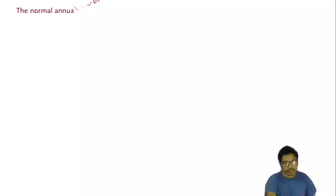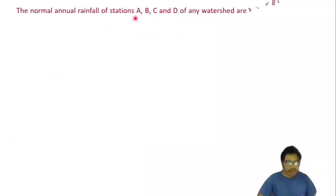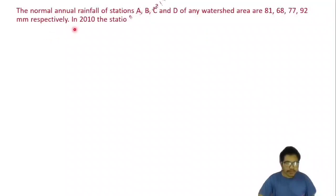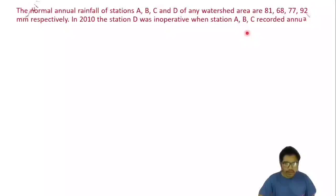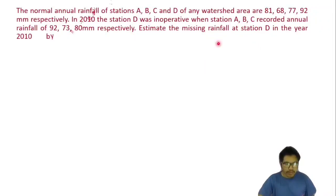In this video we will see a numerical on estimation of missing data using the normal ratio method. The normal annual rainfall of stations A, B, C and D of a watershed area are 81, 68, 77 and 92 mm respectively. In 2010, station D was inoperative when stations A, B and C recorded rainfall of 92, 73 and 80 mm respectively. Estimate the missing rainfall at station D in the year 2010 by normal ratio method.